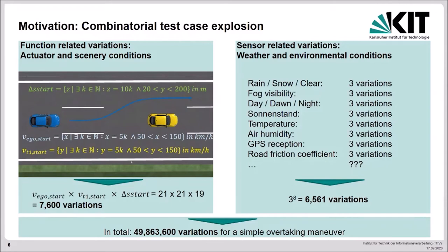If we define a certain parameter space for these and combine them combinatorically, we get over 7600 variations just for different starting scenes of that overtaking maneuver. On the other hand, there are a lot more parameters which affect our function under test. If we assume three characteristics for each of these parameters, we get over 6000 variations. In combination, we have a total of nearly 50 million variations for a simple overtaking maneuver.